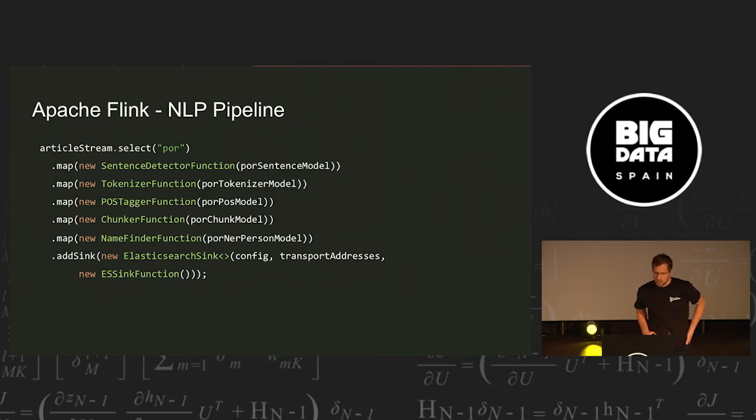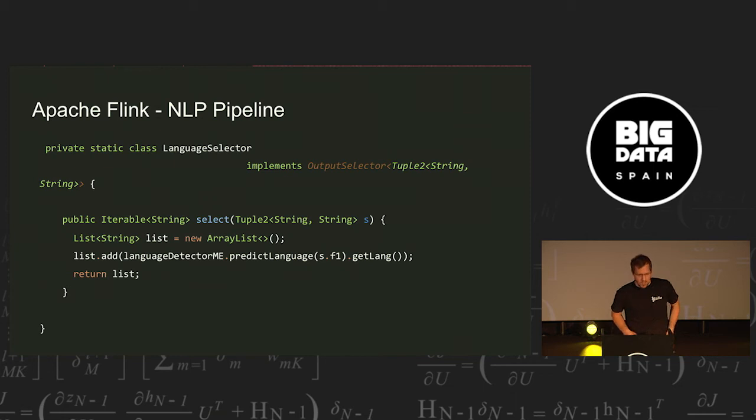And for Portuguese, it's just the same, but this time we use the Portuguese models. So just the models are different, that's the entire difference we have here for the two languages. So in the first part of the split, you need a language selector, which is a Flink output selector, and it just keys the document to the language.